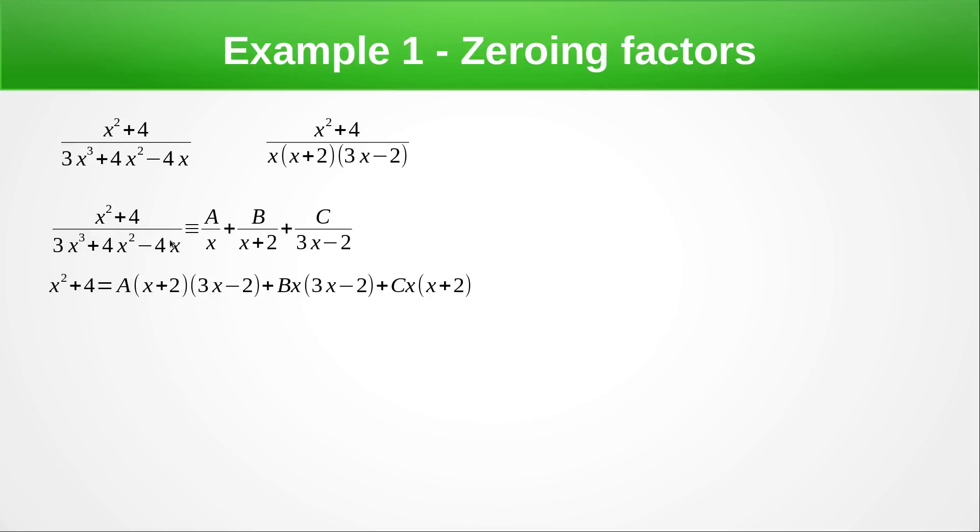So now what we always do after we've worked out this form here is we multiply through by this denominator. So when we multiply this by this term the x cancels and we're left with A times (x + 2)(3x - 2) and then we get the B term and the C term here.